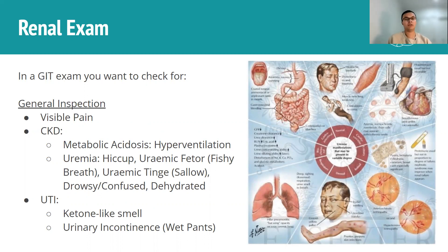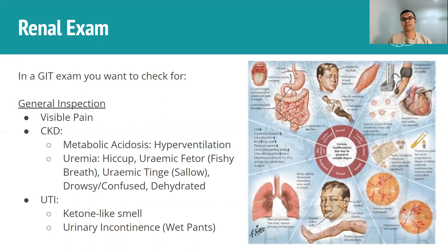You also have signs of uremia — that being retention of uric acid or urea. As a result, you can end up with things like hiccups, uremic fetor, which is basically a fishy breath, and uremic tinge, where you have a sallow complexion. You can also have a person being drowsy or confused, because urea is a toxin. You can also have some dehydration, and in terms of dehydration, you might look for things like dry mucous membranes and loss of skin turgor.